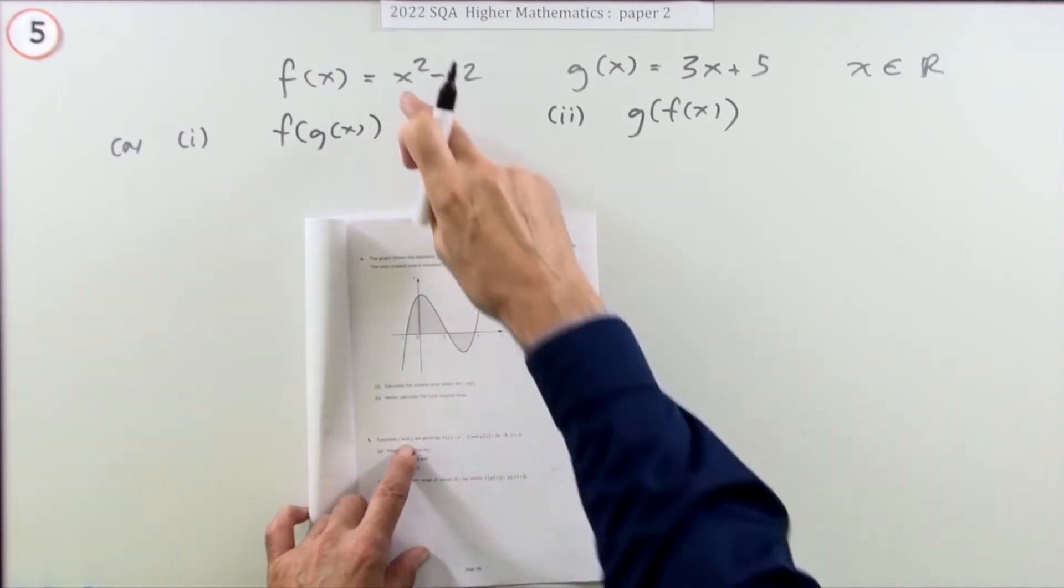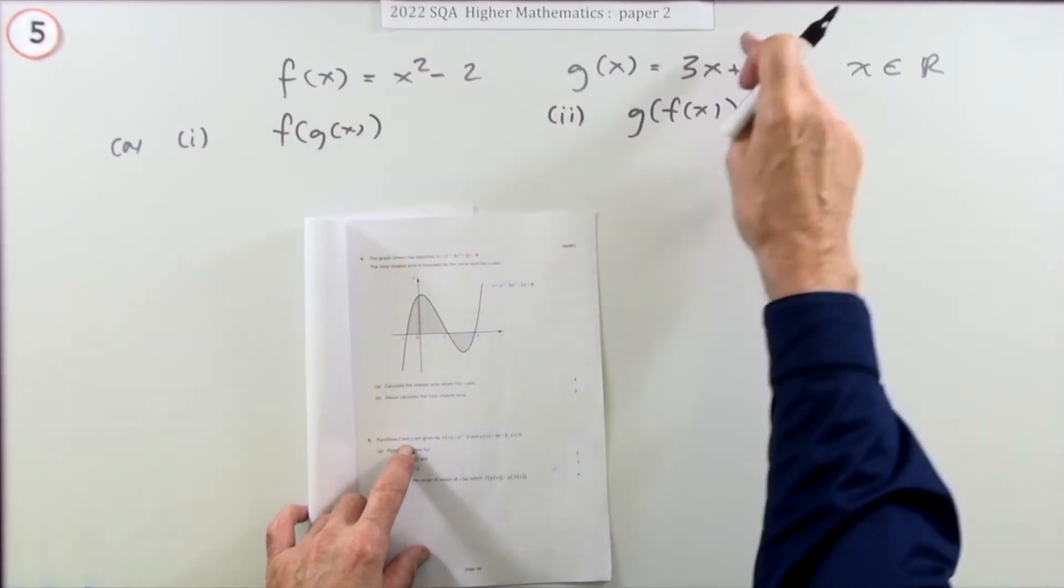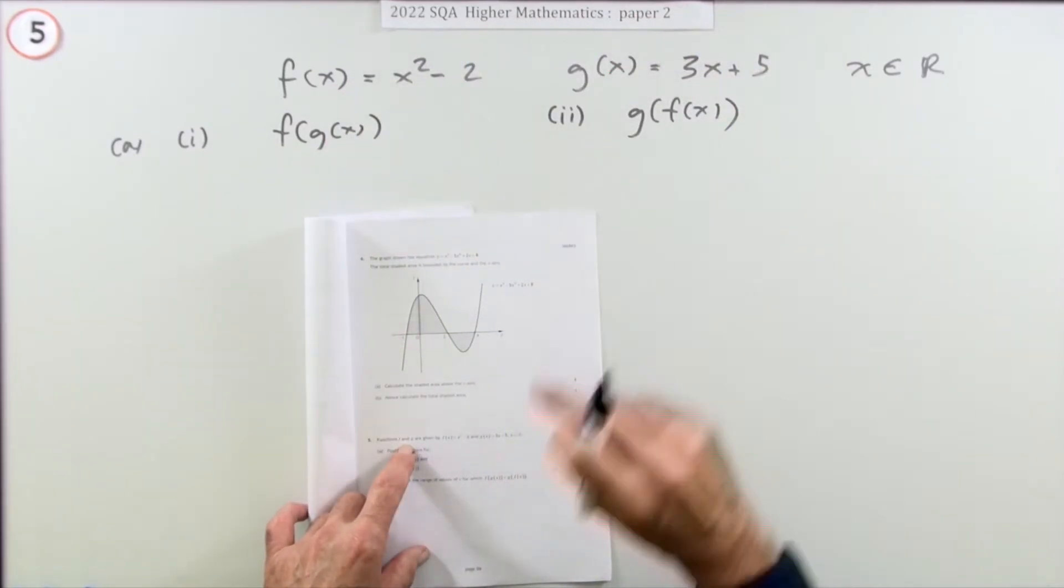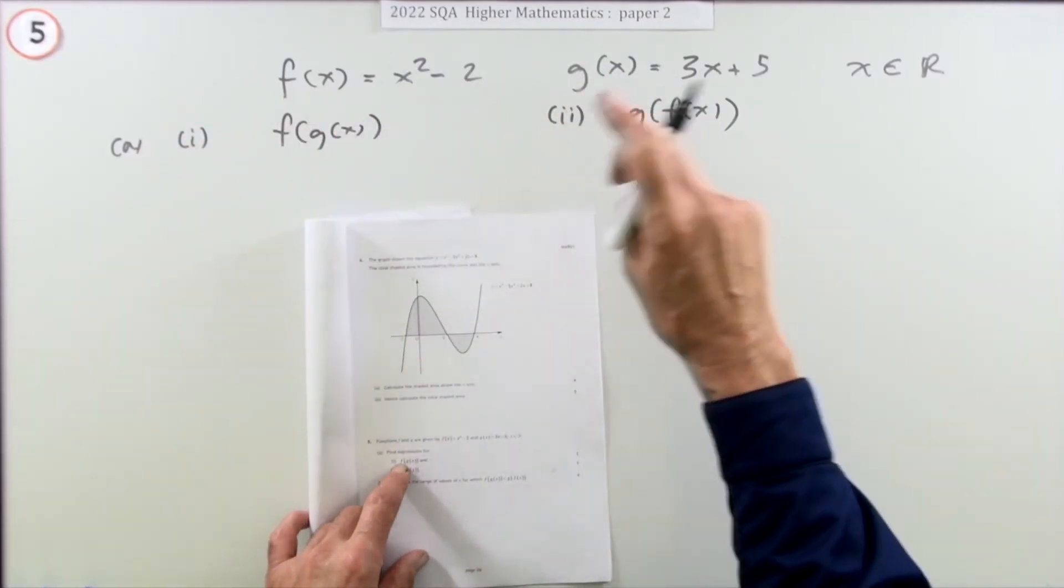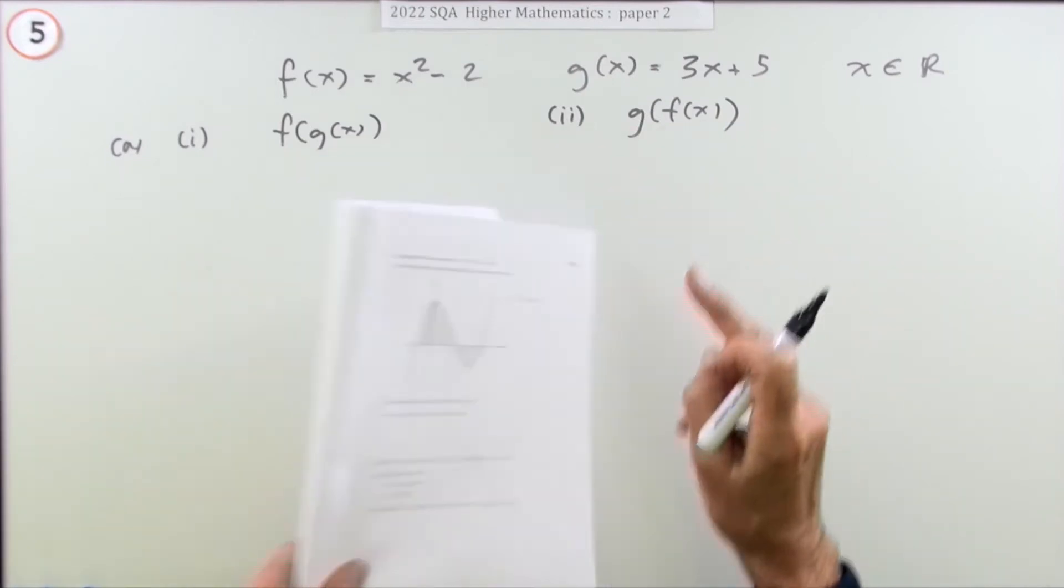Two functions f and g are given by expressions. You have to find f(g(x)) and then g(f(x)). That's two marks and one mark respectively.